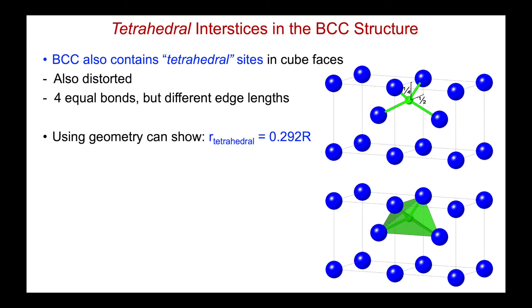Again, using simple geometry, we can show that for a perfect fit into this position, the radius ratio would be 0.292. In other words, the radius of the tetrahedral interstice is 0.292 times the radius of the larger atom. So this is a bit of a surprise. In the body centered cubic structure, the interstice with the smaller coordination number, 4 for tetrahedral, is actually larger than the radius of the octahedral interstice with the higher coordination. The reason being this distortion of the bonds.